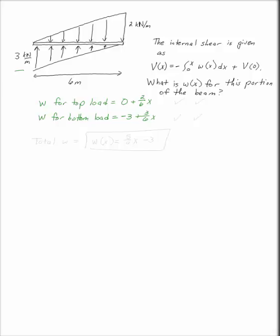Double check. At x equals 0, this one is 0. At x equals 6, this one is 2. That's good. At x equals 0, this one ends up being negative 3. And at x equals 6, you get 0. So we know that our w's are correct.